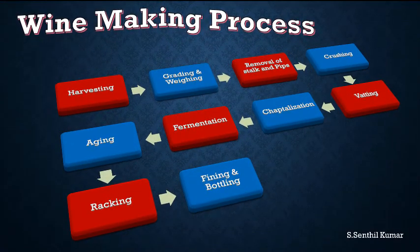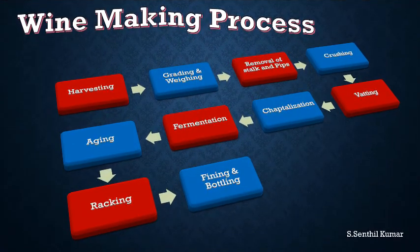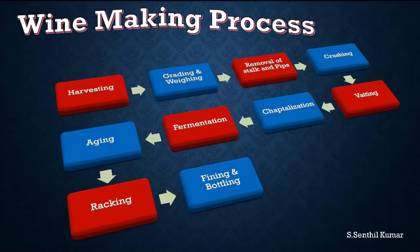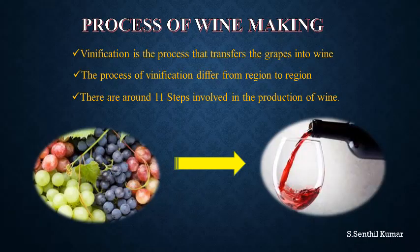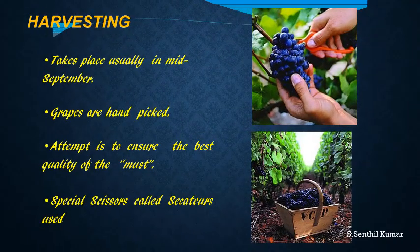In this video we are going to see the manufacturing process of wine, also known as vinification. It is the process that transfers the grape into wine. There are almost 11 different steps in winemaking, which we will see one by one. The first step is harvesting. Normally in wine-producing regions, the harvest takes place in mid-September.